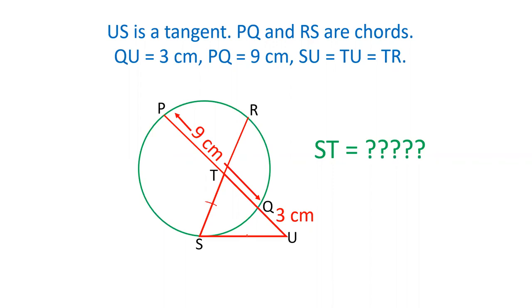It is given that SU equals TU equals TR. Length of PQ is 9 cm, and length of QU is 3 cm. So these are the values given. We have to find out ST. PQ is 9 and QU is 3 cm.